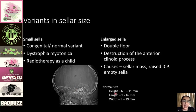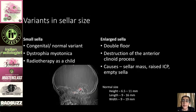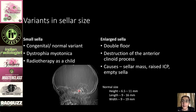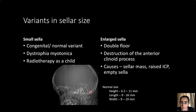Note the normal size of the sella for future reference. A small sella can be a congenital variant or can be seen in dystrophia myotonica or following prior radiotherapy. An enlarged sella can be a normal variant such as a double sellar floor, or can result from destruction of the anterior clinoid process, erosion, sellar masses, or raised intracranial pressure — including idiopathic intracranial hypertension.